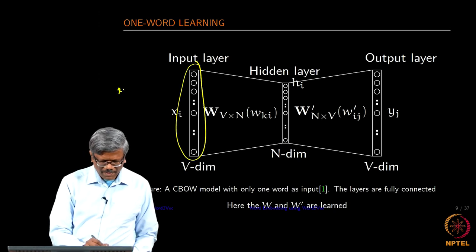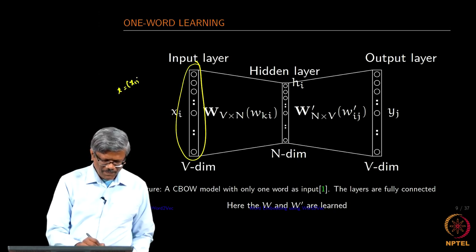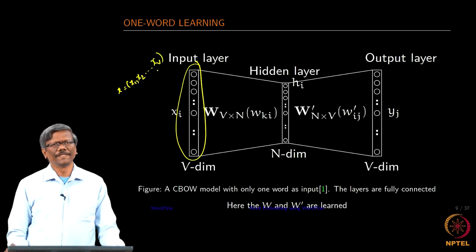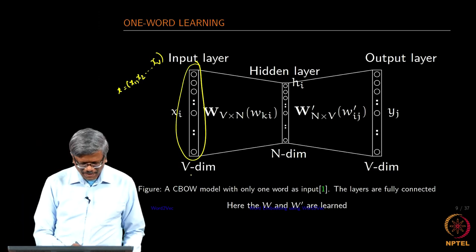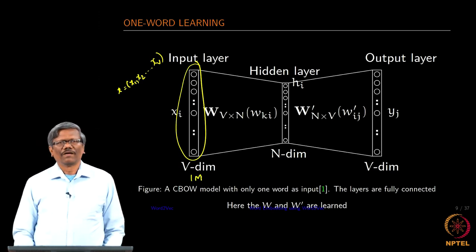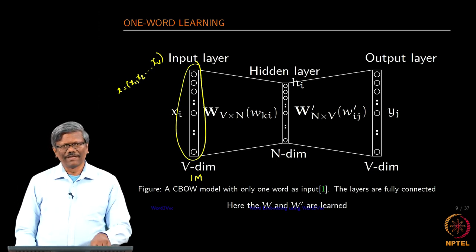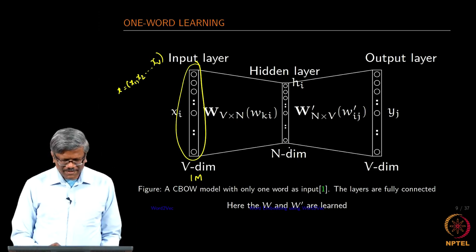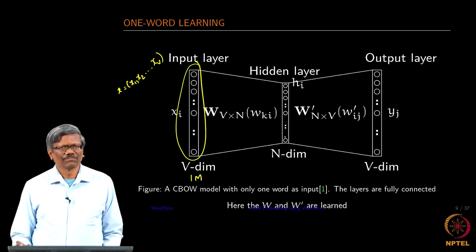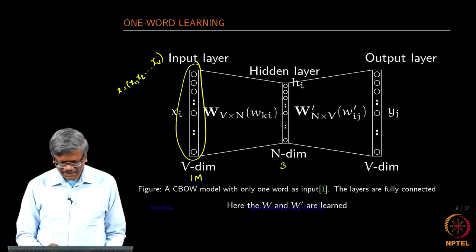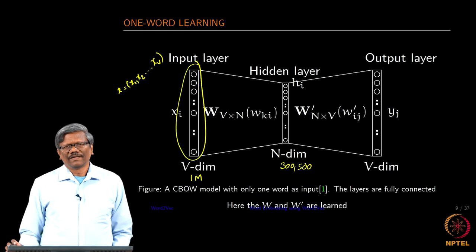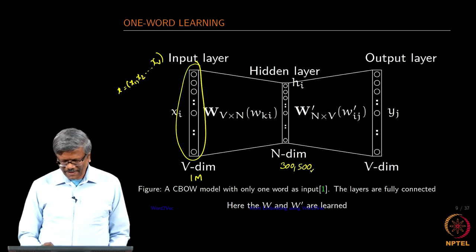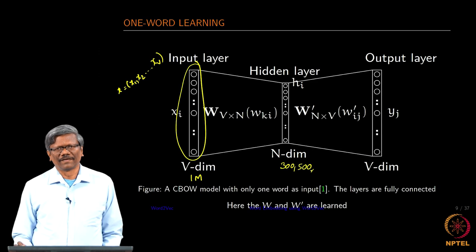This is the input layer of size V. X would be x equal to x1, x2 to xV, that would be the size of the input. Supposing if we have 1 million words as the vocabulary then the number of elements in the input layer is 1 million. Hidden layer size is smaller than the input layer size. We can go up to the value of 300 or if you want still a further finite distinction you can go up to 500.